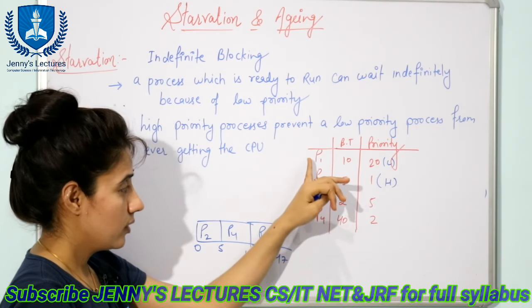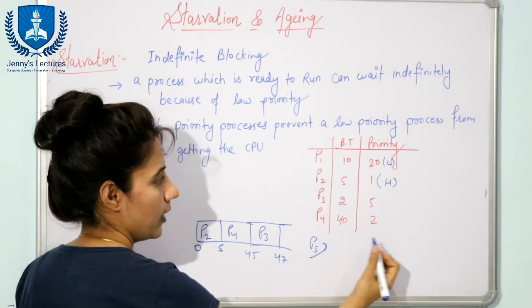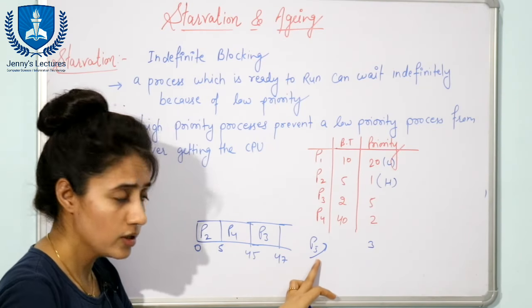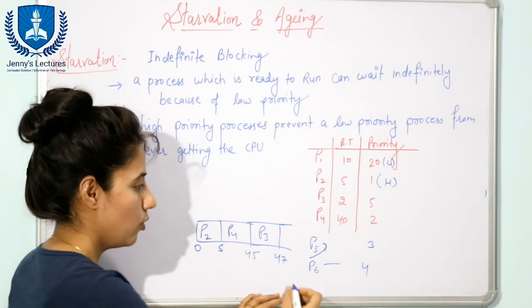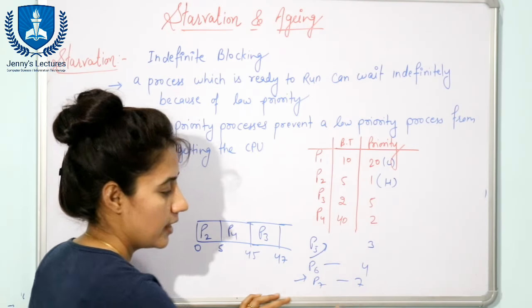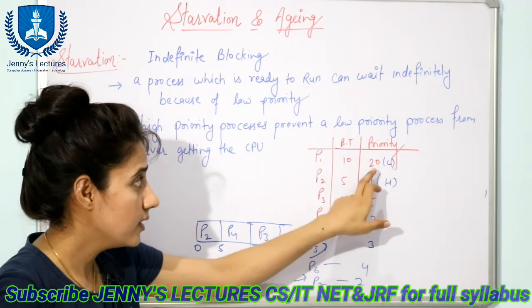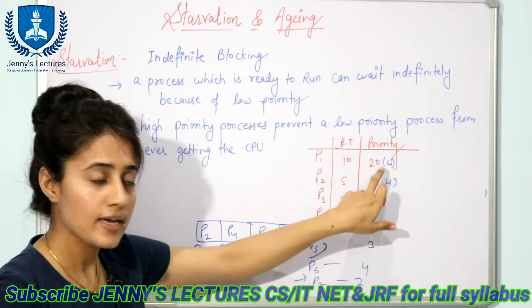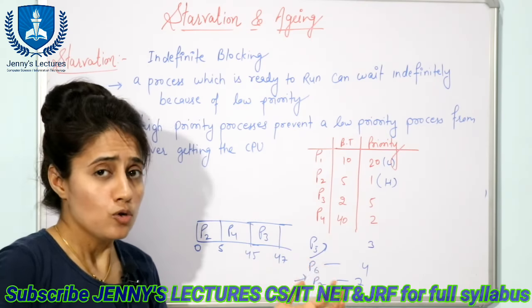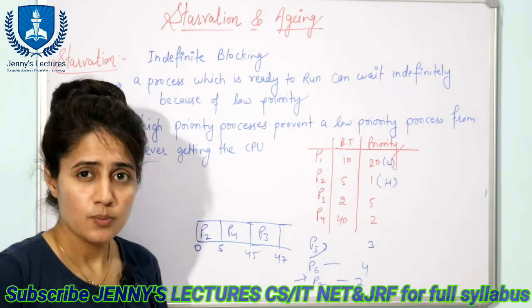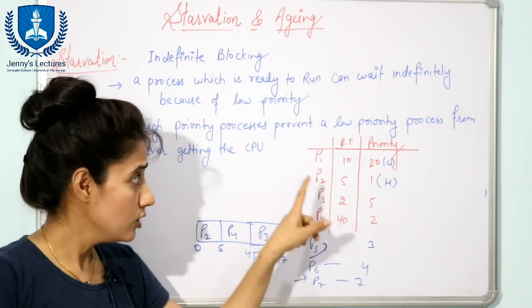At some point of time, before P1 is allocated the CPU, another process P5 comes with priority number 3, then CPU is allocated to P5. One more process P6 comes with priority number 4, one more process P7 with priority number 7. Many processes keep coming with priority higher than P1 — numbers less than 20 — so P1 would not get the CPU, and we cannot say for how long.